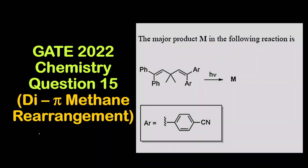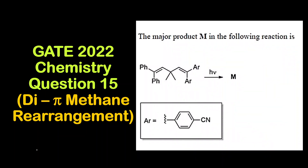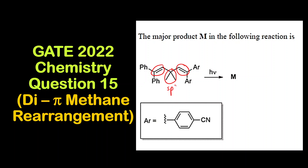Hello everyone, welcome to Chemazon Complete Chemistry. In today's video we are going to solve question 15 of JEE 2022 chemistry paper. This is based on a photochemical reaction called di-pi methane rearrangement. It is called di-pi methane rearrangement because 'di' means two, 'pi' means there are two pi bonds, and 'methane' means both pi bonds are separated by one sp3 hybridized carbon.